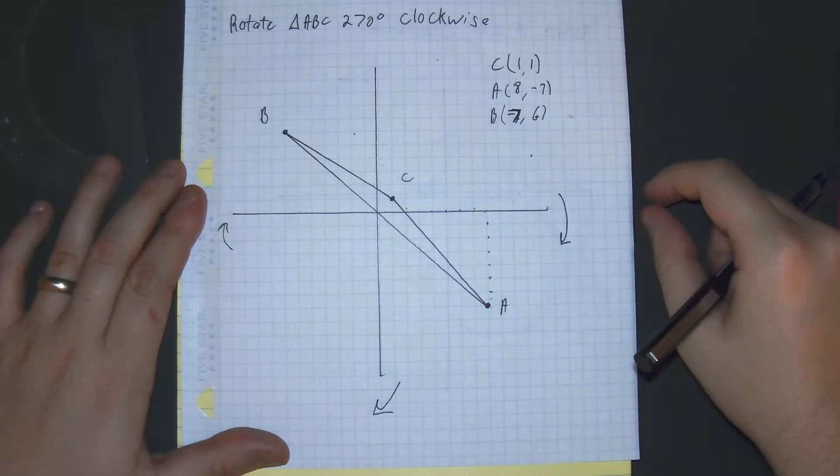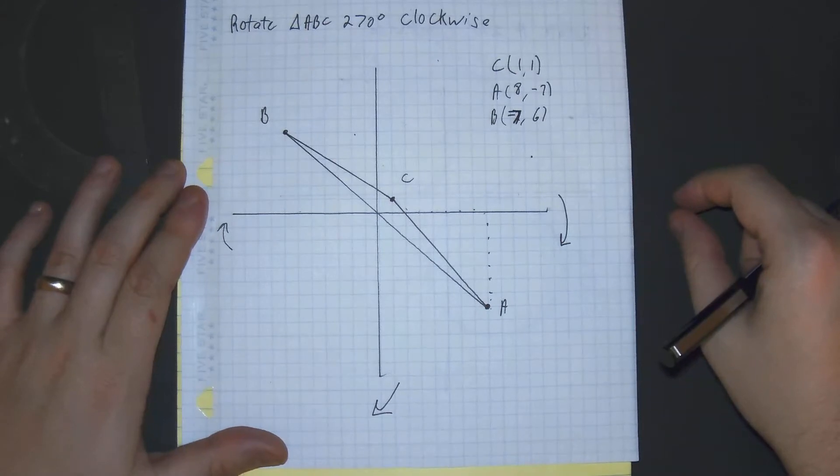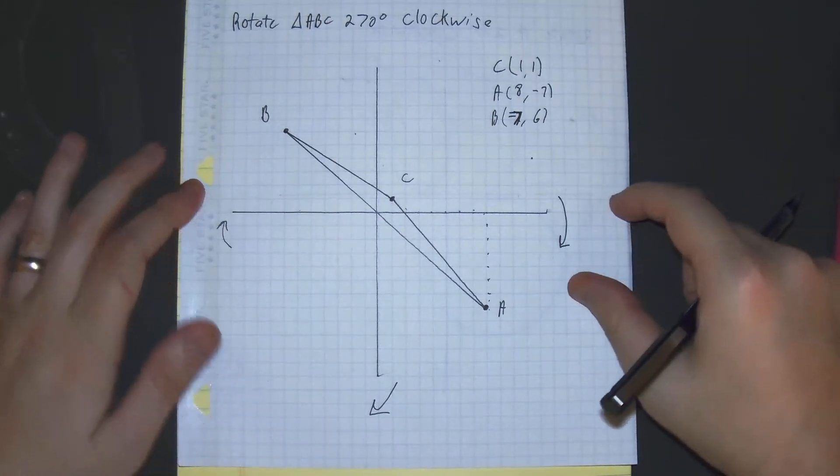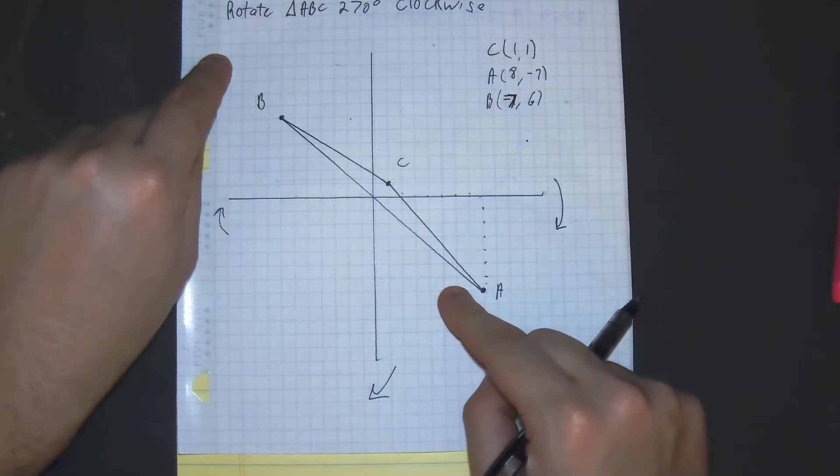The first thing we should do when doing our clockwise rotation is we're doing this through the visual way. To represent a clockwise rotation, we need to rotate our paper counterclockwise. So we're at zero degrees now, and we need to do 90 degrees to represent the clockwise rotation.